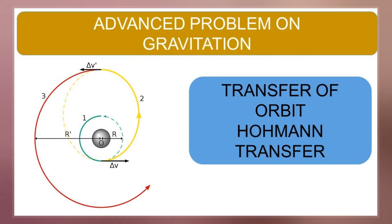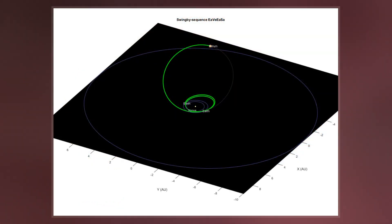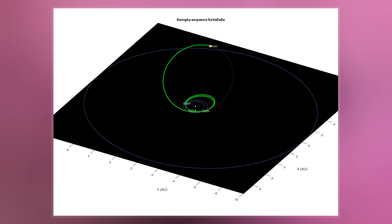The orbital maneuver to perform the Hohmann transfer uses two engine impulses, one to move a spacecraft onto the transfer orbit and a second to move off it. This maneuver was named after Walter Hohmann.